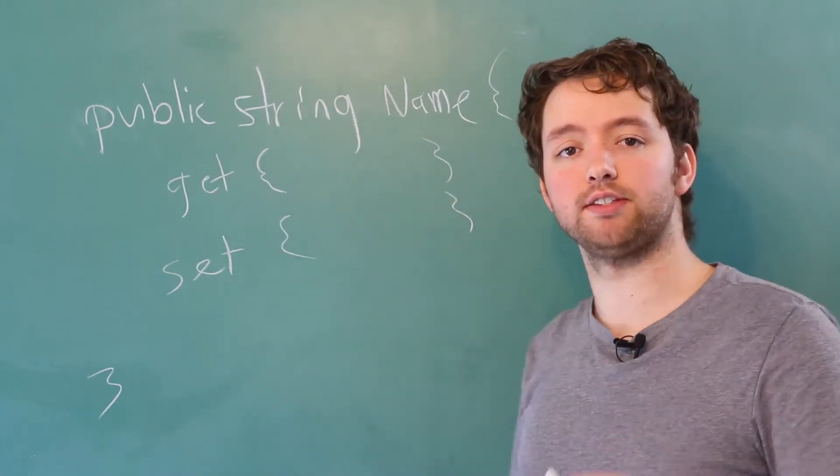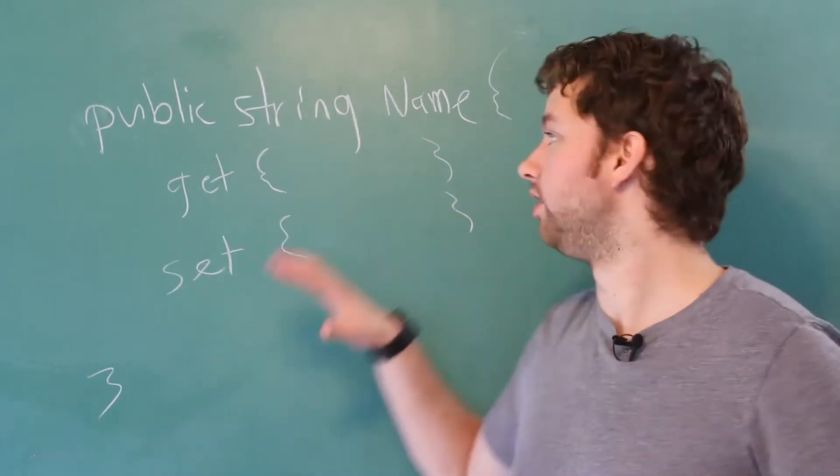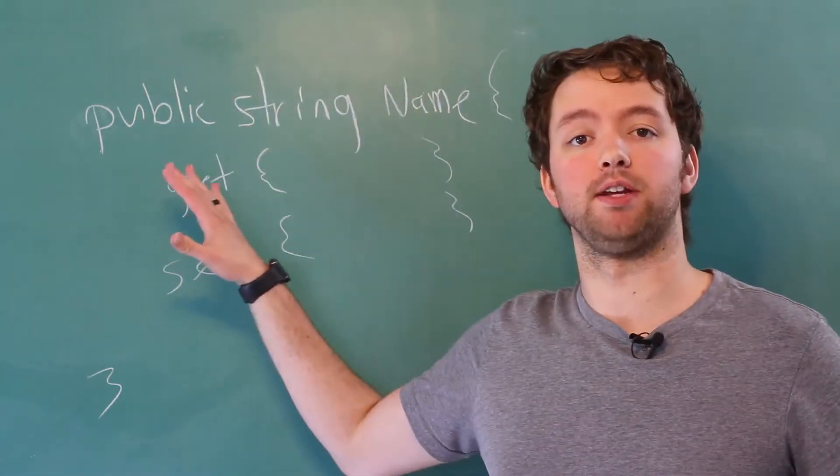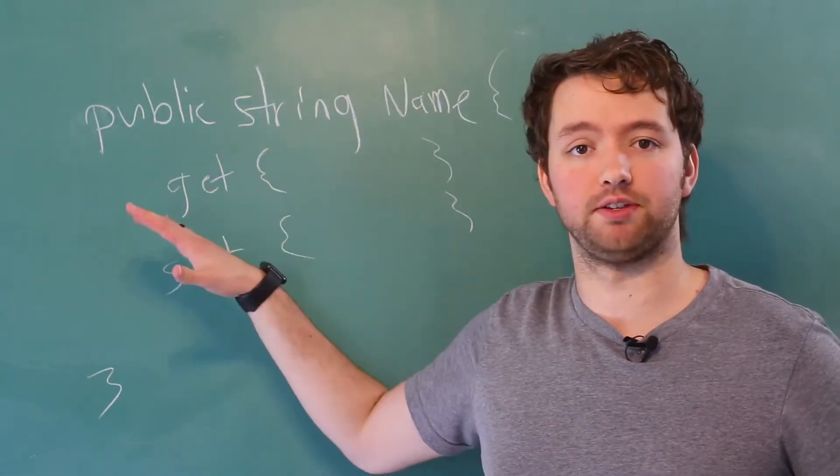This can act as the getter and the setter. So the same functionality exists in C Sharp. It's just more appropriate to put that all within a property. And we're going to be doing that throughout the rest of this video series.